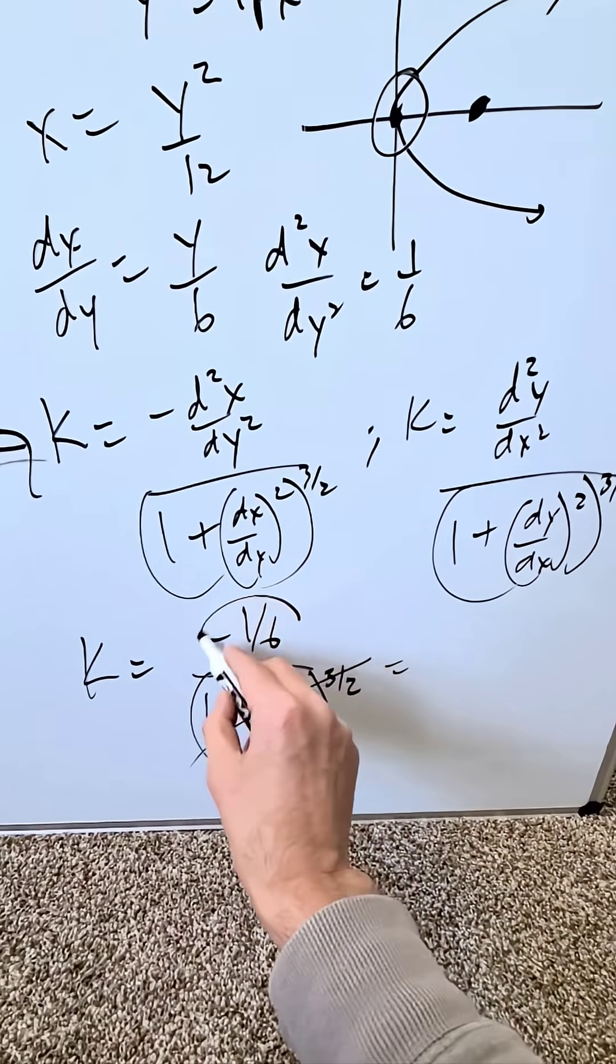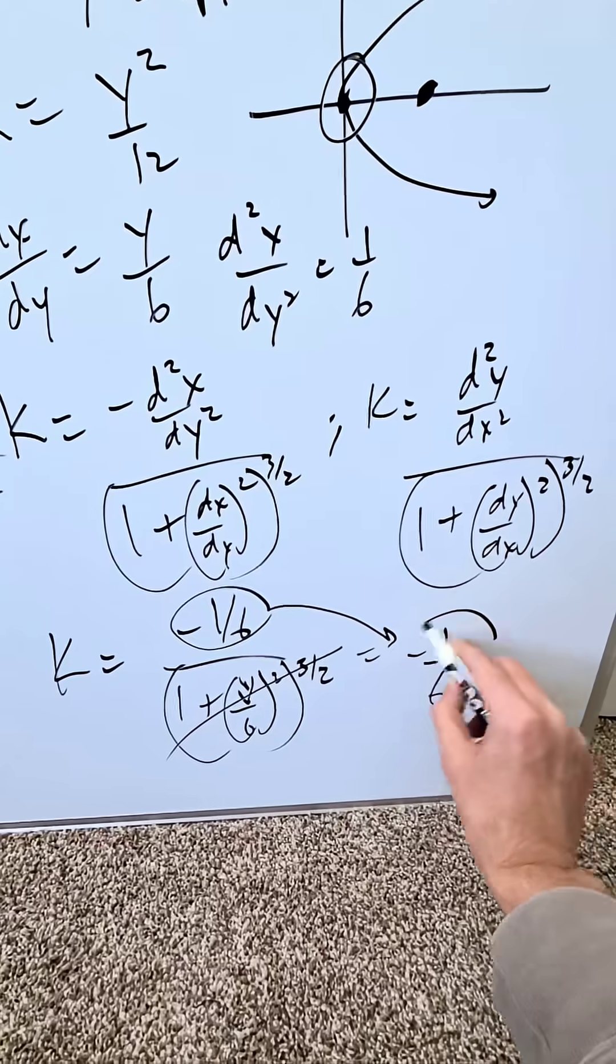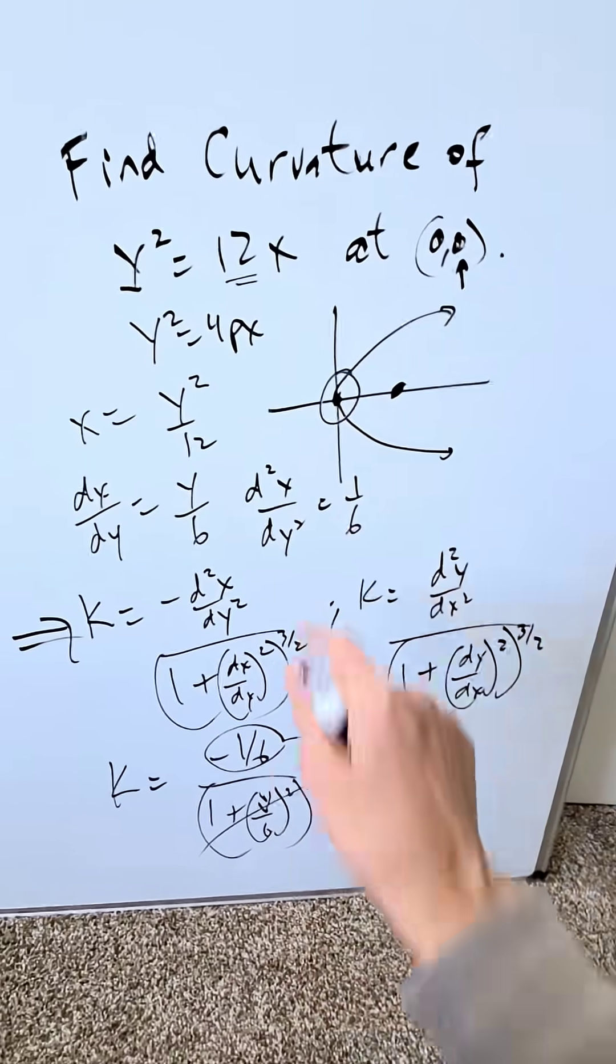My end result is only the numerator value: -1/6. This is indeed the curvature of this expression at the origin.